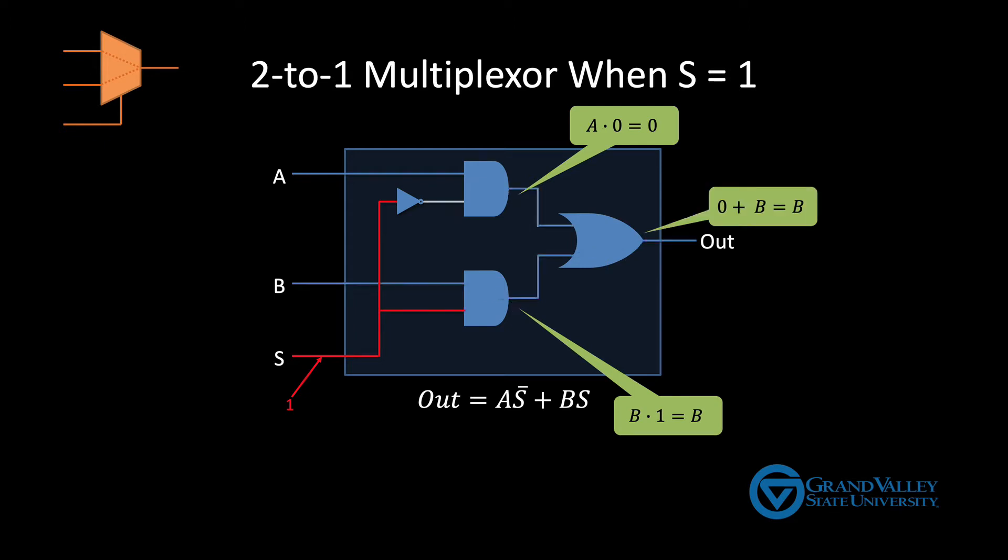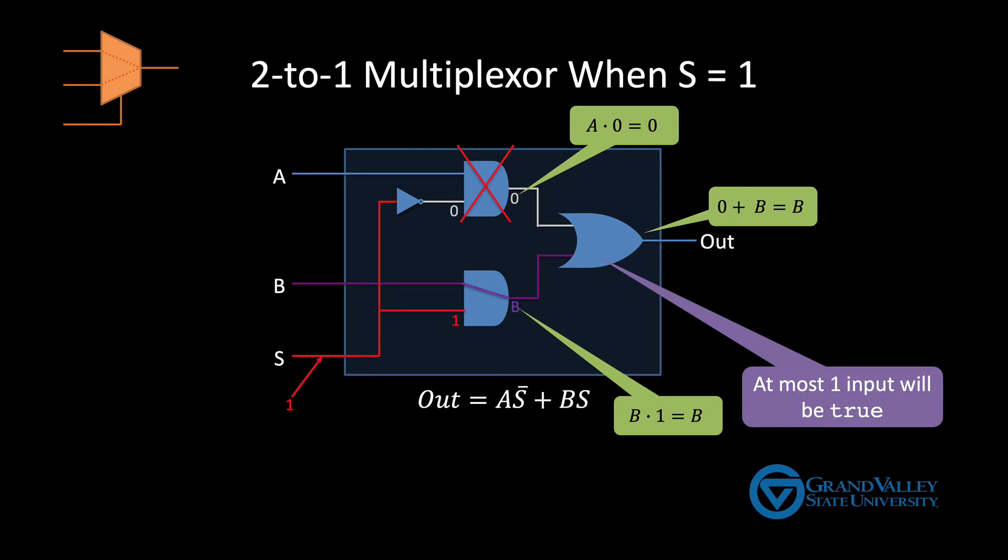The key observations here are, first, the AND gate that gets a 1 from the selector, which in this case is the bottom AND gate, passes the corresponding input through. Second, the AND gate that gets a 0 from the selector, in this case the top AND gate, blocks the input, resulting in a 0 output. And third, at most one of the inputs to the OR gate will be true. Therefore, the OR gate will just pass that value through to the output.